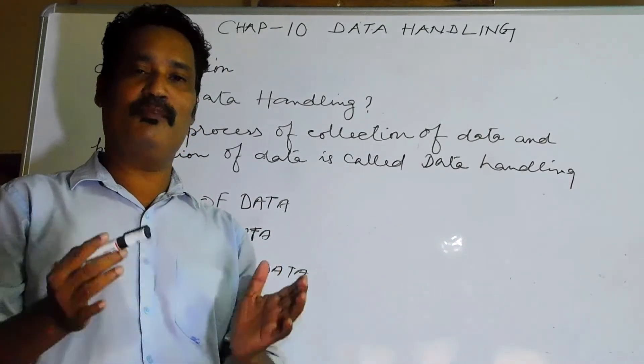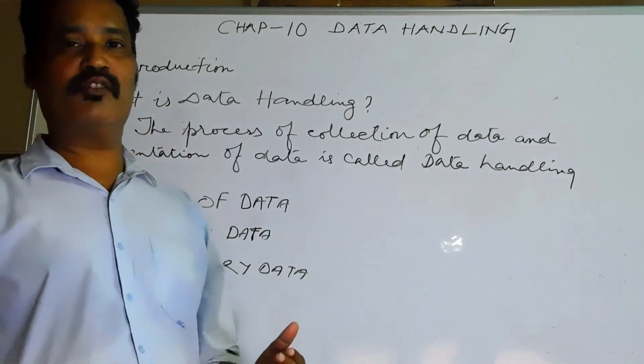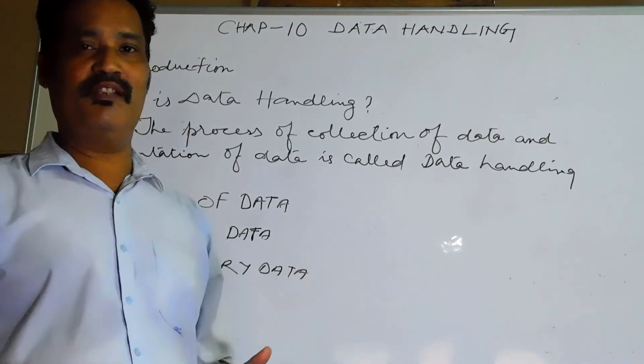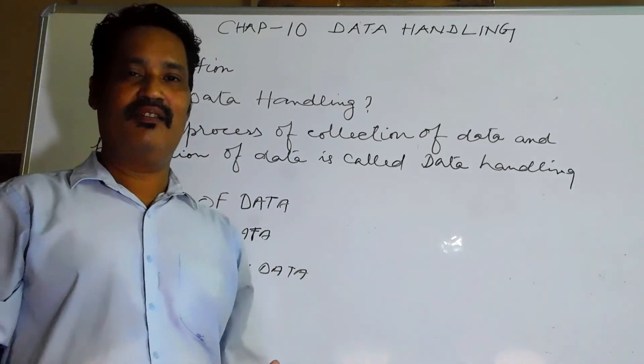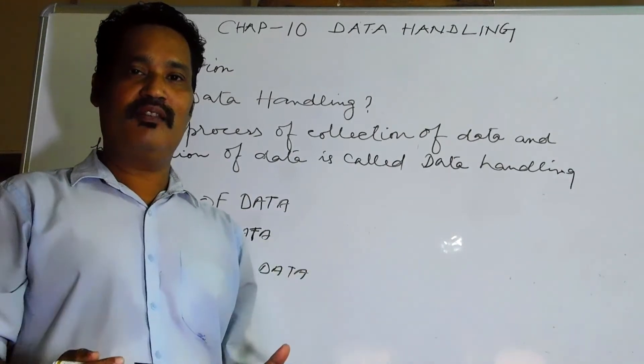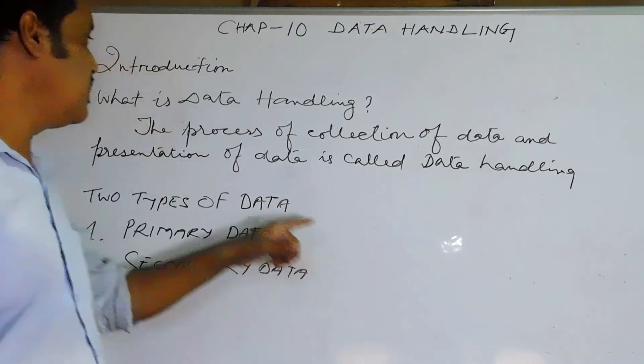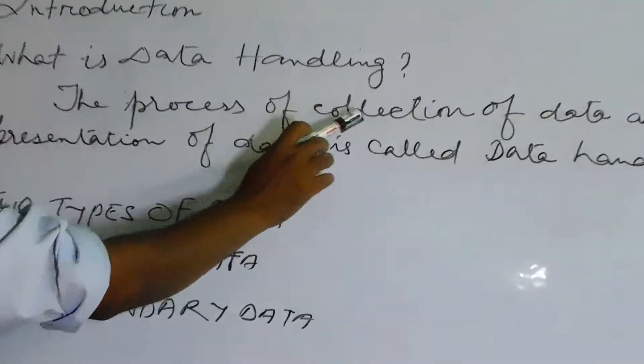Now your mother has got the full information regarding what vegetable is there in the kitchen. So the information collected and putting it or writing it on a paper is called data handling. So here it is given what is data handling: the process of collection of data and presentation of data is called data handling.